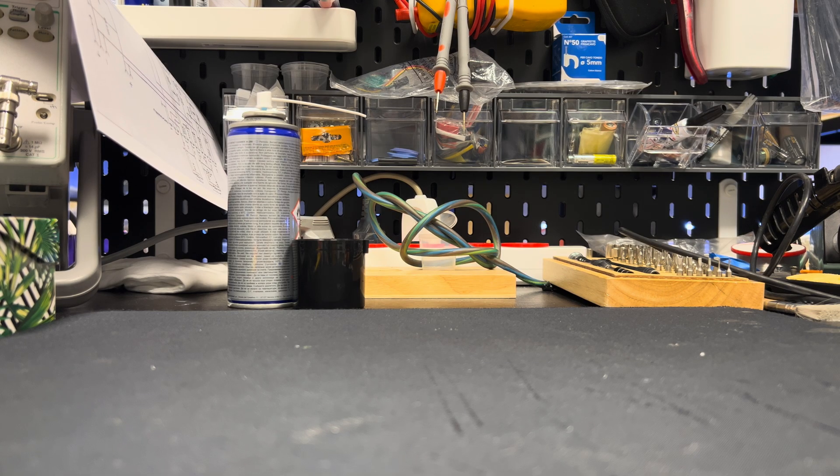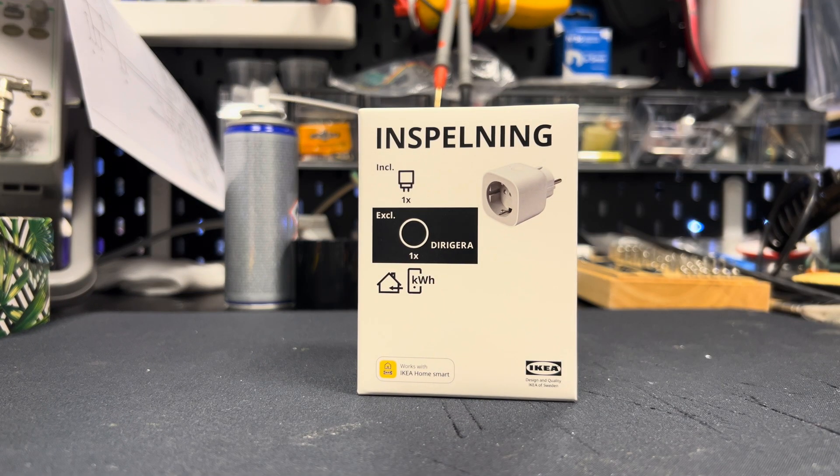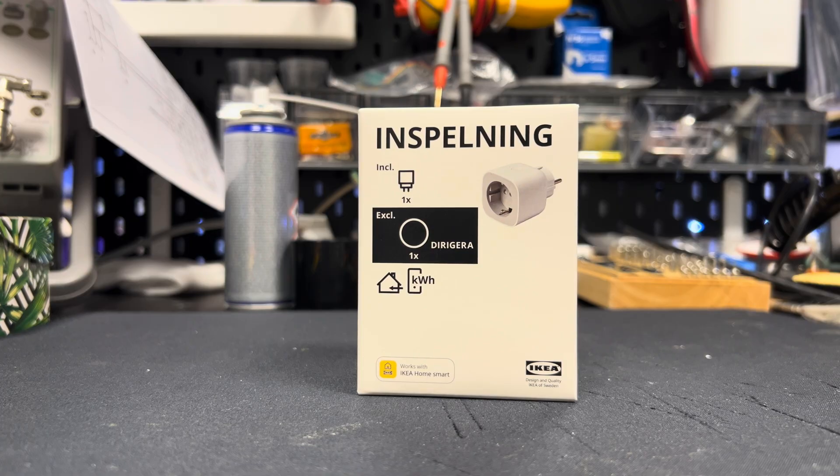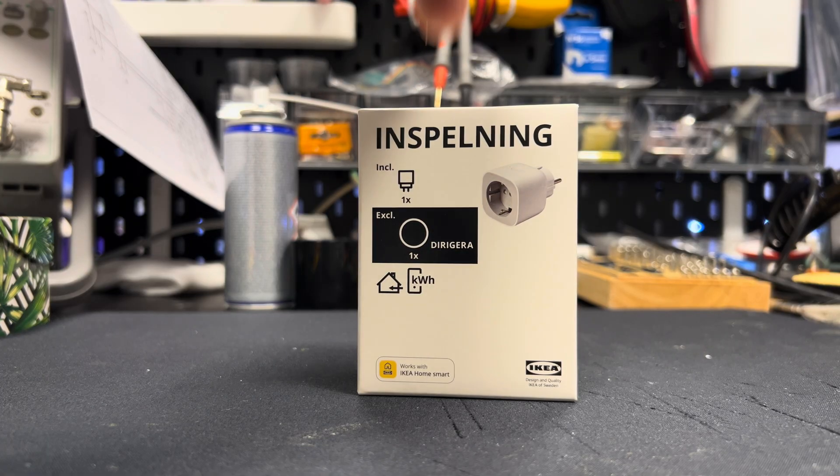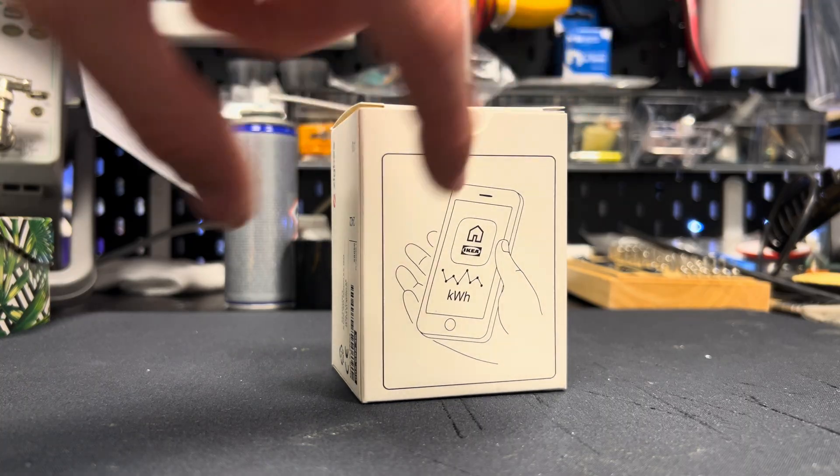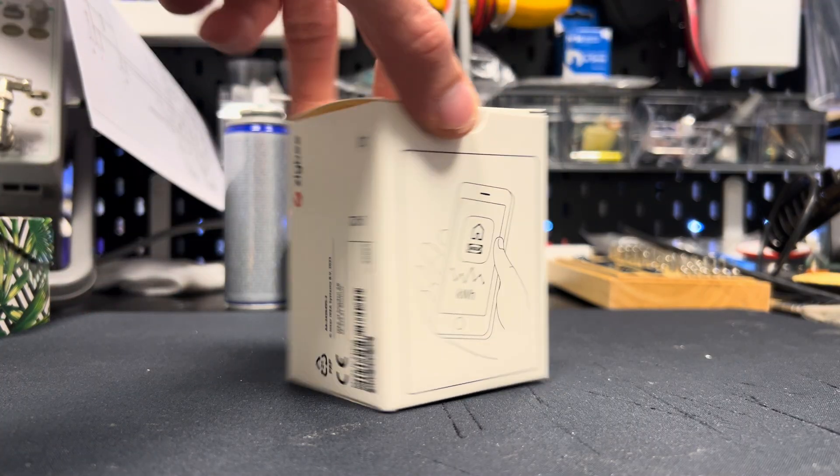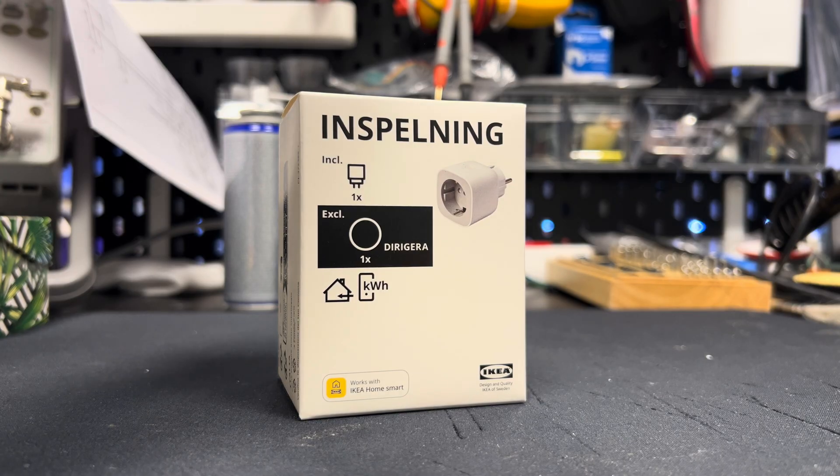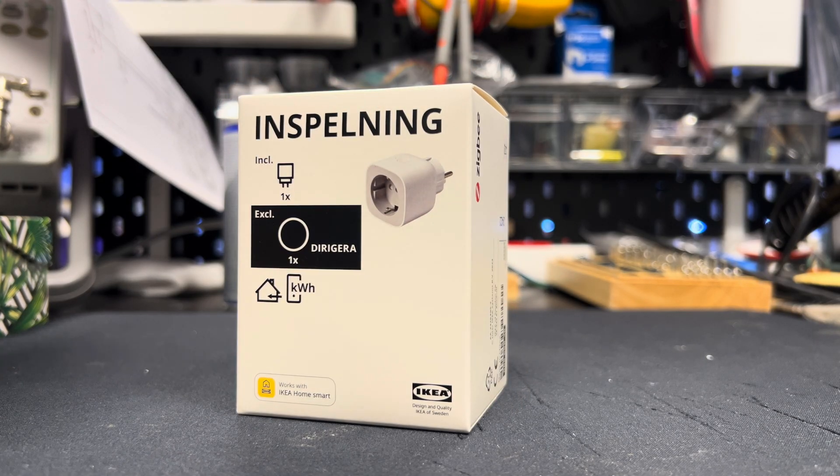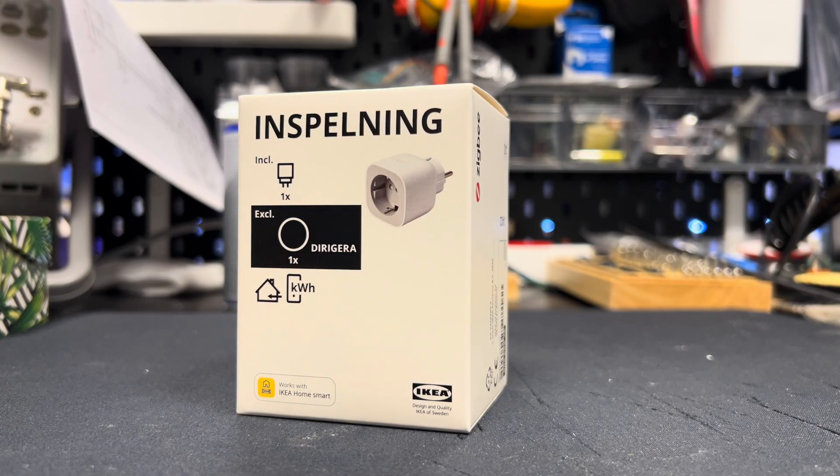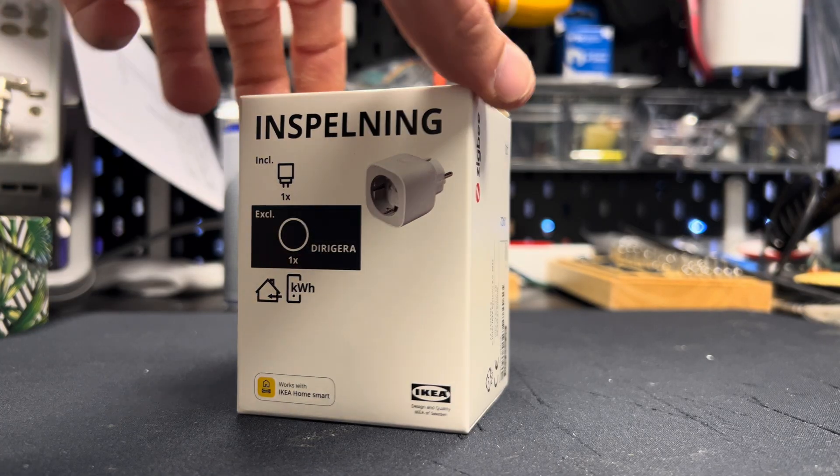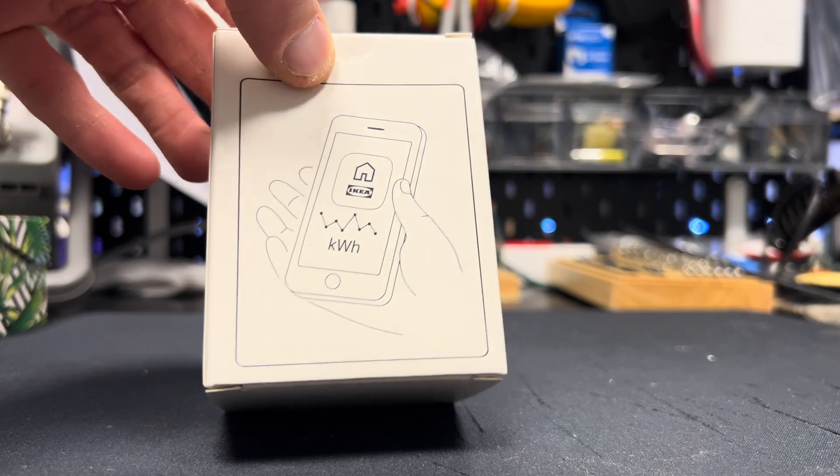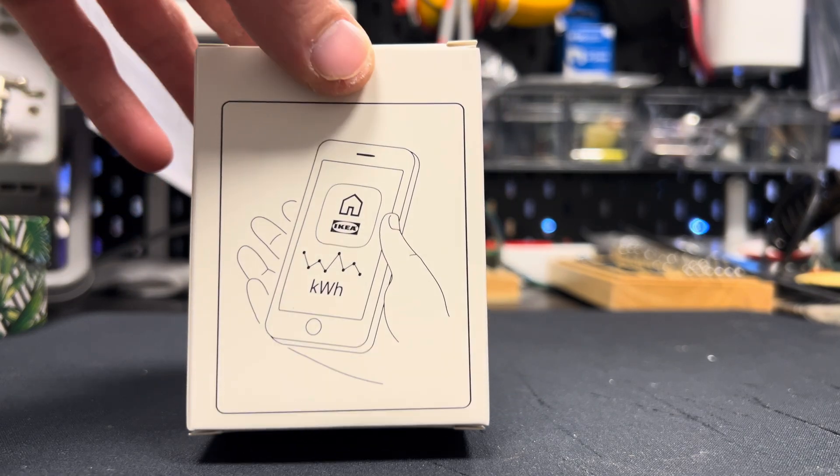Hey guys, super quick teardown video today of the just released IKEA Inspelning Smart Plug. This is the model with built-in energy monitoring. There's also a cheaper one called the Tretakt that only switches on and off. This one is slightly more expensive. The Tretakt retails for 7 euros, this one is 10, so it's 3 euros more. But this has the very interesting feature of measuring your energy consumption.